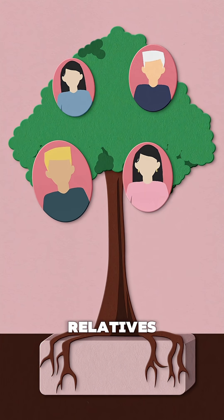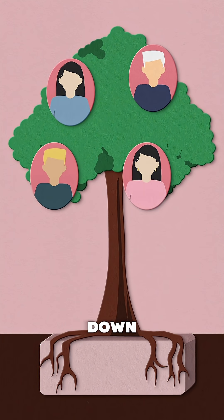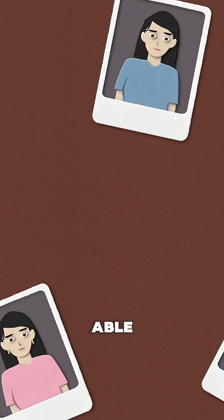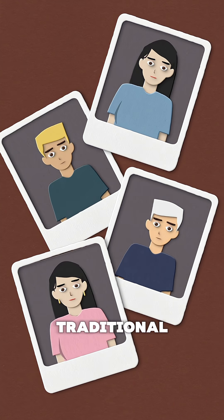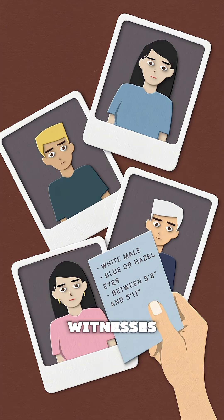After identifying relatives of Joseph D'Angelo, the police were able to narrow their search down to a single family instead of millions of random people. Detectives were able to hone in on Joseph through traditional investigative techniques, comparing descriptions from witnesses with people in the family of interest.